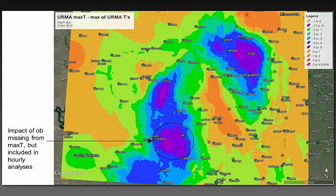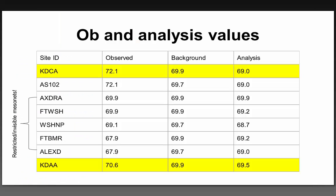Q&A from Jeff Craven, Central Region: In the DCA example, DCA had an observed temperature of 72, the background was roughly 70, but the analysis ended up cooler than the background because of the influence of all these other observations? That's correct. METARs are given about 20% more weight than mesonet observations, but in this case, because there were so many mesonets so close to DCA, they overwhelmed the impact of DCA.